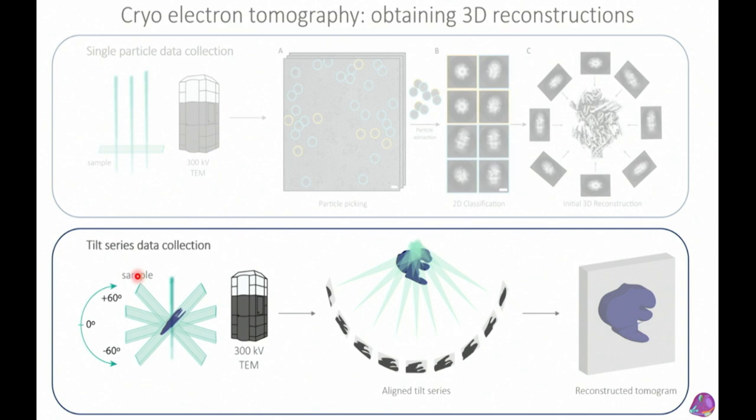In cryo-electron tomography, you're also trying to get different views of your object, but instead of having millions of copies with different orientations in a static image, you take a single object and tilt it. You take an image at zero tilt, tilt three degrees, take another image, and so on — getting images of the same object from many different angles to reconstruct a 3D volume.